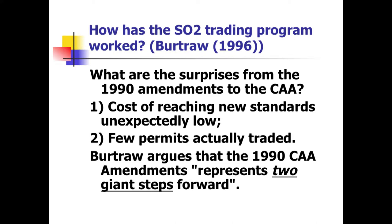The first thing is that the cost of reaching the standards was much lower than what everybody thought. People predicted the price of permits would be like $800 per ton. They never were — they were like $200. So dealing with these programs was a lot cheaper than what people thought.